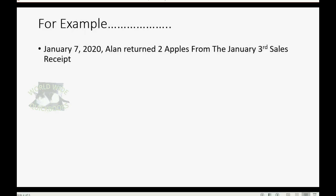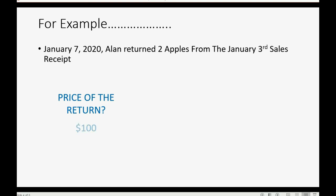For example, let's imagine on January 7th, Alan returned two apples from the January 3rd sale receipt. What would be the price of the item's return, or the sales price? Well, we sell the apples for $50 each, so $100 of the sale is what's reversed. And then, what did we pay for the two apples that were returned? Well, we buy them for $10 each, so we paid $20 for the two apples that were returned.